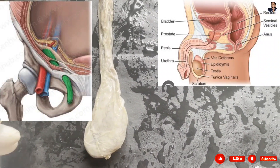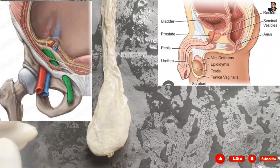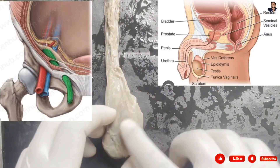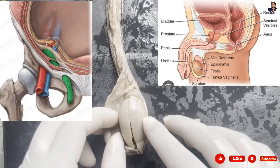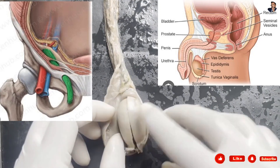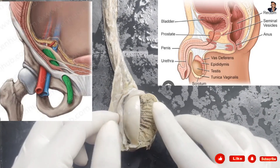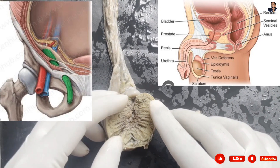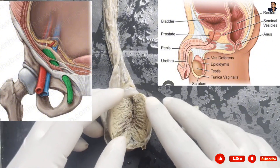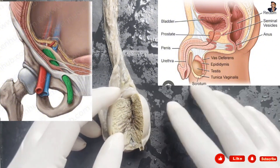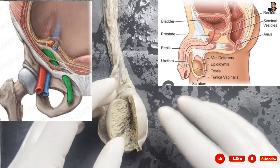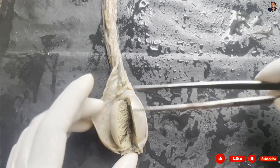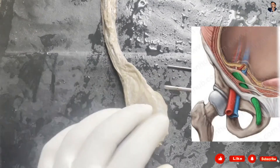Today we have a demo on the testes, also known as the male gonads, which help in the production and formation of sperm as well as the formation of testosterone. Before dealing with the testes, we have to know about the structure which is holding the testes.